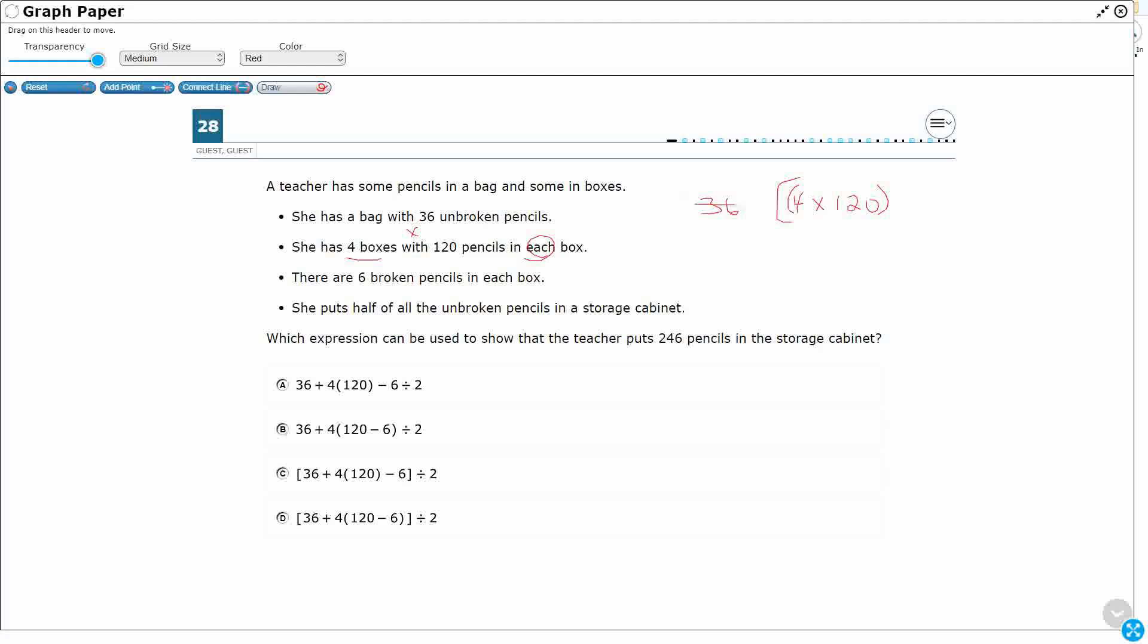So honestly, that's not going to work. We're going to need this 4. That 6 comes out of the 120, right? So there we go. Let's take the 6 away. So really, there's 114 full pencils. And then half of the unbroken pencils go into a storage cabinet.